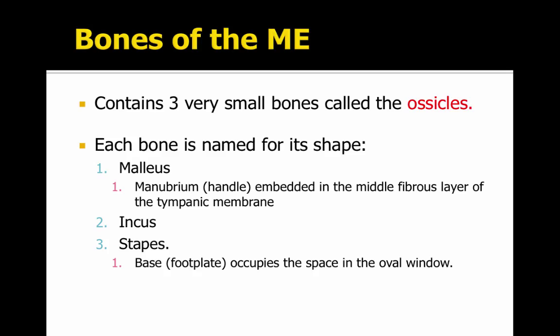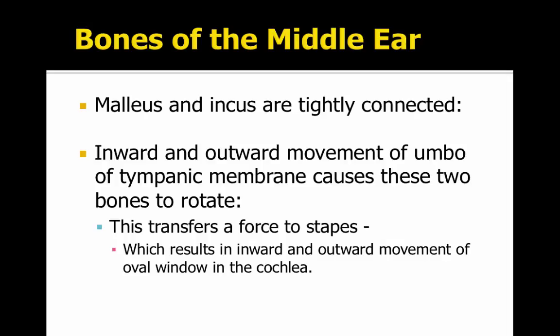There are three very small bones in your body — in fact the tiniest — called the ossicles, located in the middle ear. They are each named for their shape: the malleus, the incus, and the stapes. The stapes footplate occupies the oval window and it pushes on the cochlea.